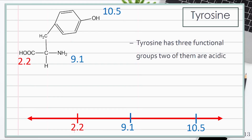Below 2.2, we expect the whole compound to be in its protonated form — the ammonium group is protonated, and the carboxylic group is also protonated. Above 2.2, we expect the carboxylic group to be deprotonated.